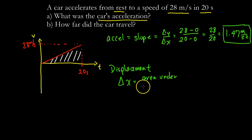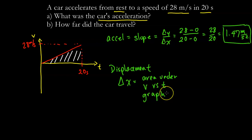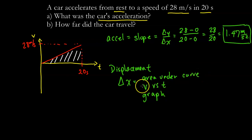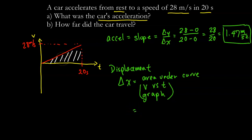I want to be specific here: it's the area under the velocity versus time graph. For example, a position versus time graph would not represent displacement this way. So looking at the area under the curve here, we can see it forms a triangle.